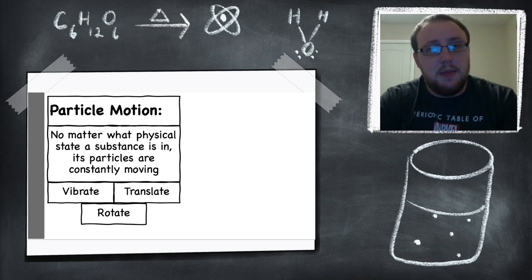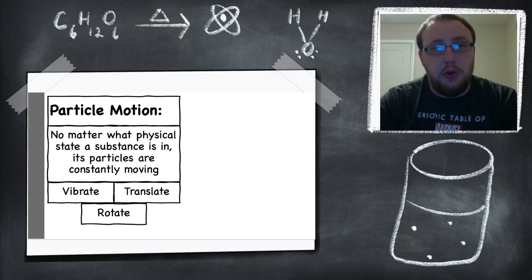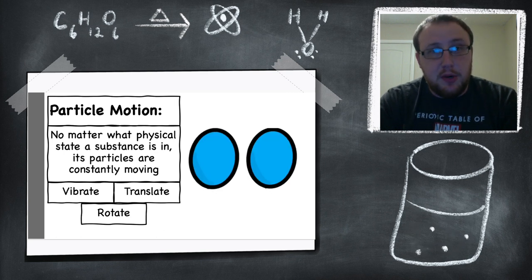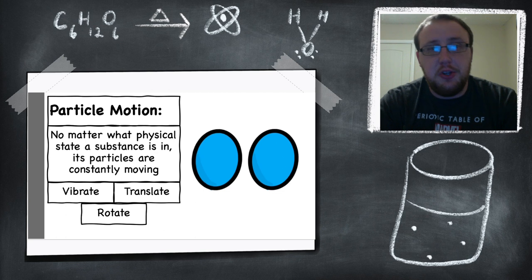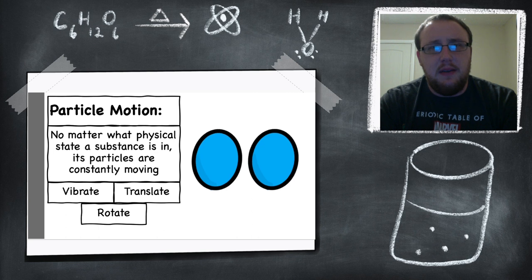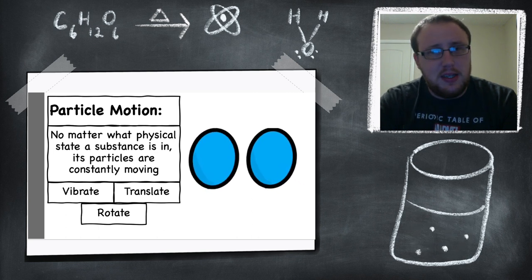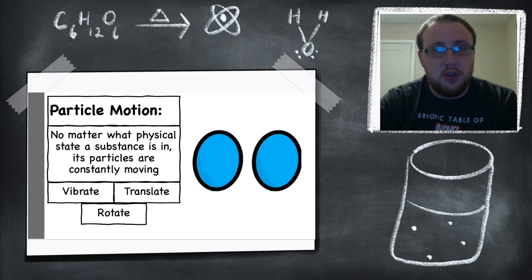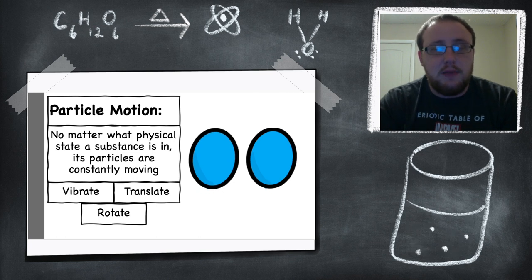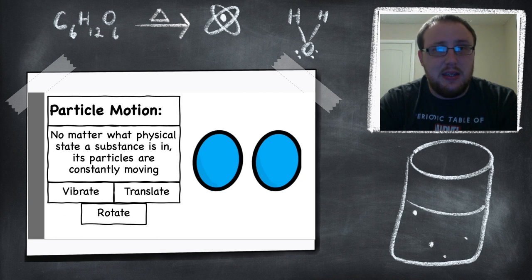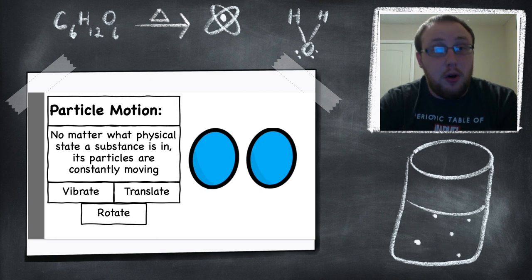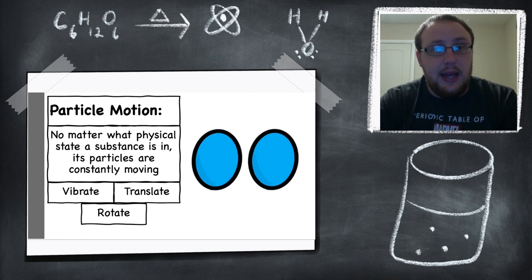There are three types of particle motion, or three ways particles move. The first one is vibration. Vibration is just a simple moving back and forth. Particles just vibrate next to each other — they move back and forth, they don't cross each other or move around each other. They stay in a relatively small space and just vibrate back and forth.